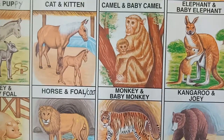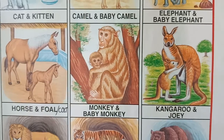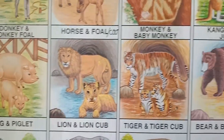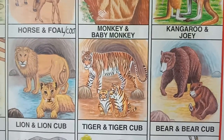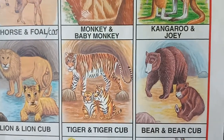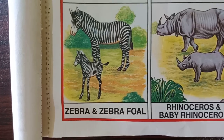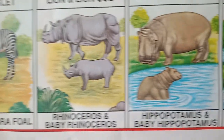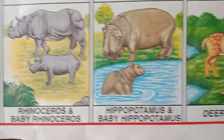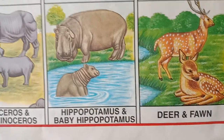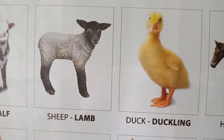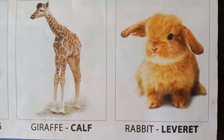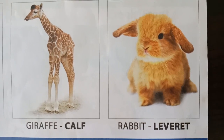Monkey — baby monkey. Kangaroo — joey. Pig — piglet. Lion — lion cub. Tiger — tiger cub or cub. Bear — bear cub. Zebra — zebra foal. Rhinoceros — baby rhinoceros. Hippopotamus — baby hippopotamus. Deer — fawn. Duck — duckling. Giraffe — calf. Rabbit — leveret.